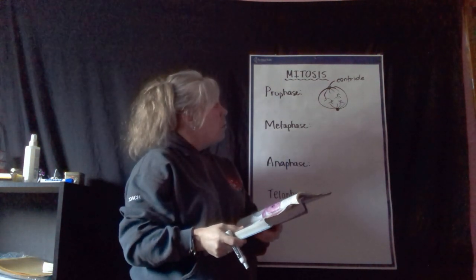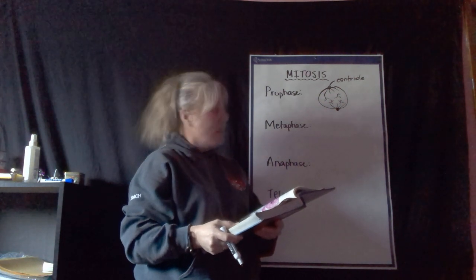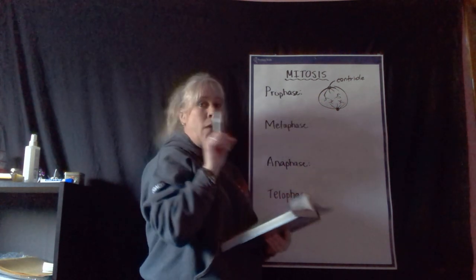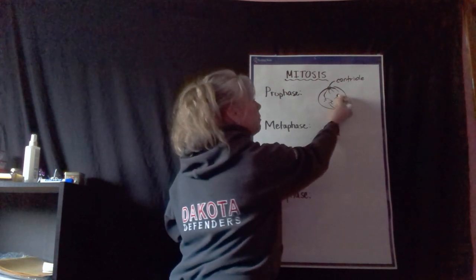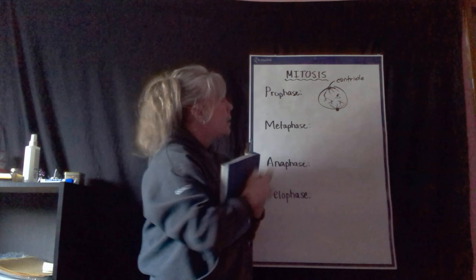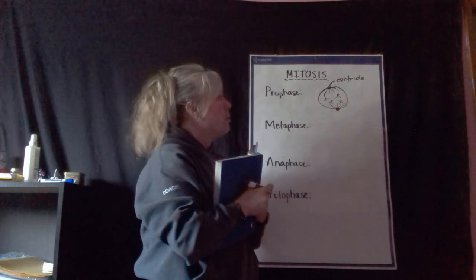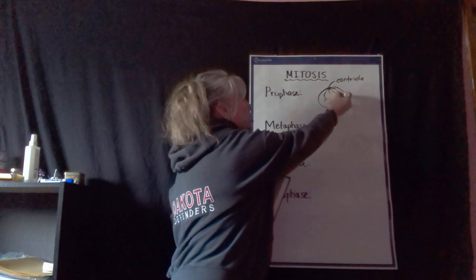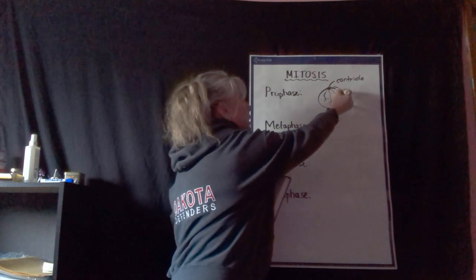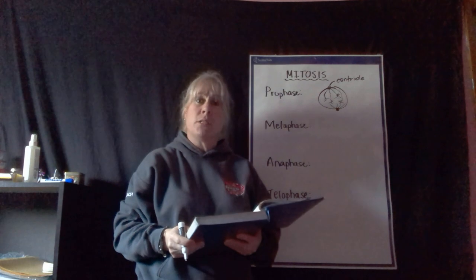These little fibers start to come out from the centrioles. What happens is these centrioles, as they grow out like little finger-like extensions, they attach to — remember what I call the centromere? It attaches to the centromere, which is the middle part of that double-stranded chromosome. So these spindle fibers will all start to attach to each one of these. And that's basically what happens in prophase.